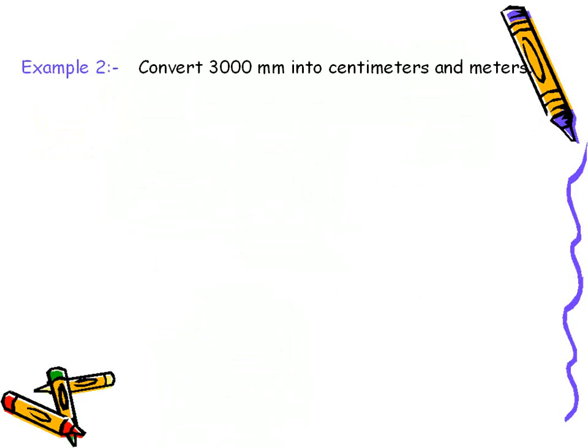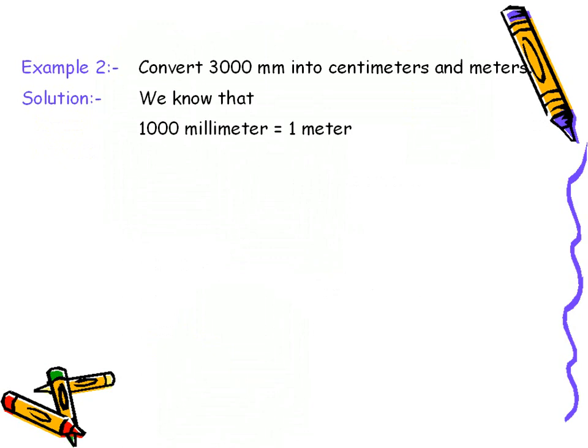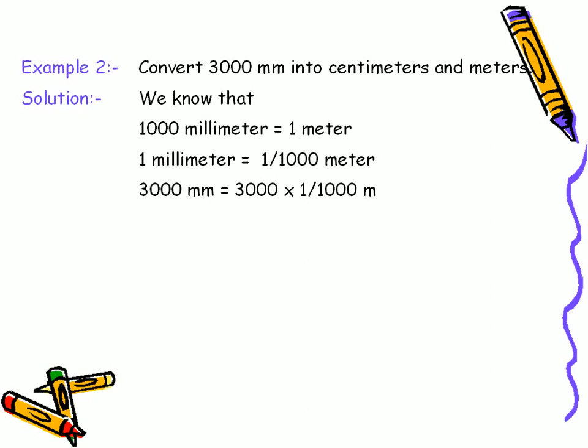In the second example, we need to convert three thousand millimeters into centimeters and meters. As one thousand millimeters are equal to one meter, so one millimeter will be equal to one by one thousand meter. Therefore, three thousand millimeters must be equal to three meters.